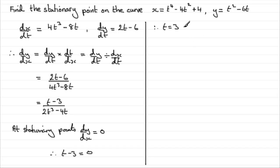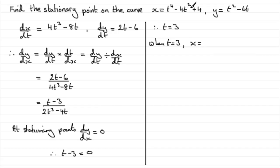Now that we know t equals 3, we can find the corresponding x and y coordinates of the stationary point. When t equals 3, substituting into x gives 3 to the power 4 minus 4 times 3 squared plus 4, which comes to 49. And for y, 3 squared minus 6 times 3 gives minus 9. So we've got a stationary point at (49, -9).